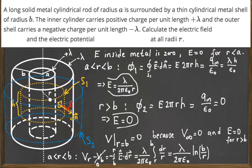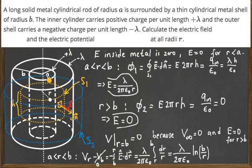Finally, the potential at any point on the surface of the inner metal cylinder is found by substituting r equal to a into the expression. The potential is the same throughout the entire volume of the inner cylinder because the electric field inside is zero — so whatever potential exists at the surface is the same everywhere inside.